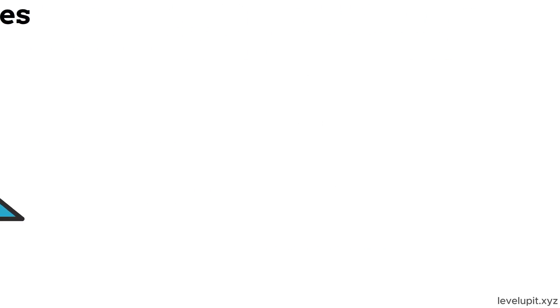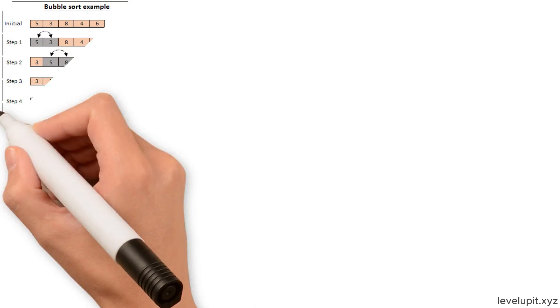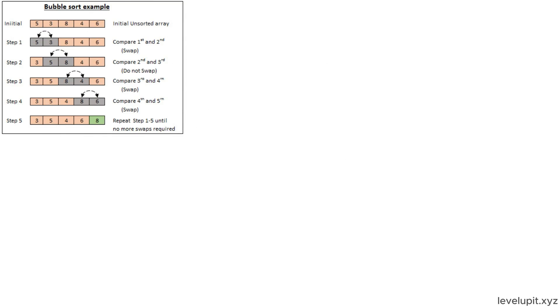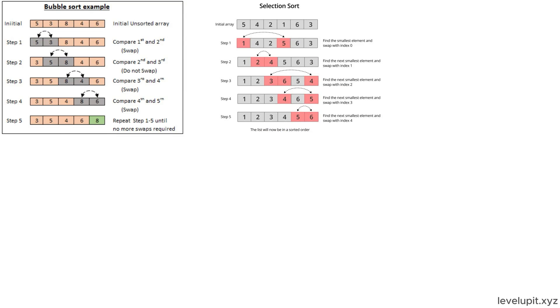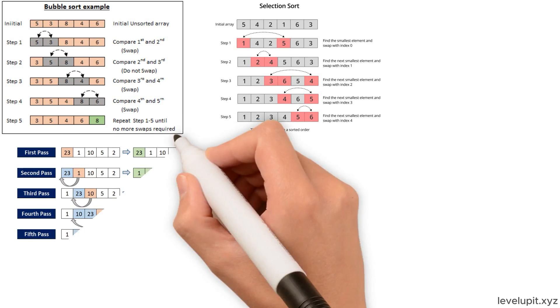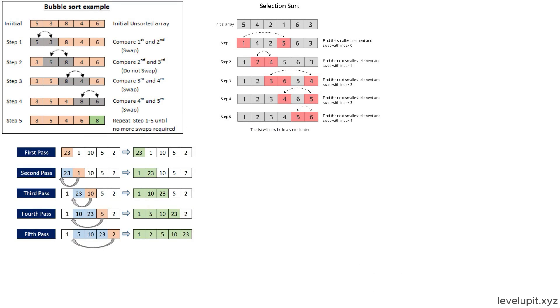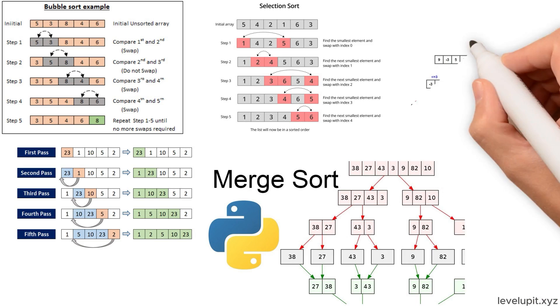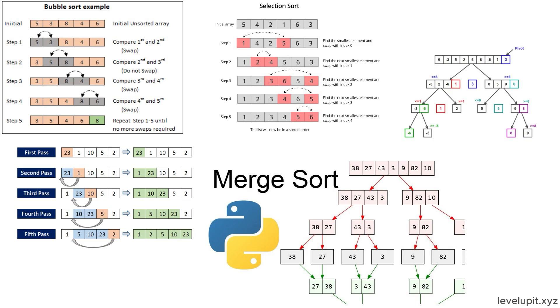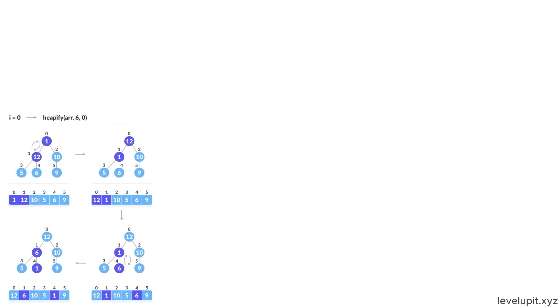It helps to carry short mental pictures. Bubble sort gently swaps neighbors until the big ones float to the end. Selection sort keeps picking the smallest to place next, like building a shelf from lightest to heaviest. Insertion sort builds a neat hand of cards by sliding each new card into place. Merge sort divides a messy pile into tiny piles and merges them back in order. Quicksort picks a pivot and forms two groups around it, repeating the trick on each side. Heapsort keeps the biggest at the top of a tree and moves it to the end, one by one.